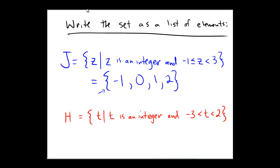H is equal to the set of T such that T is an integer and negative 3 is less than T is less than 2. So this time, this would be equal to the set.